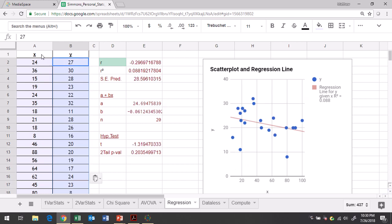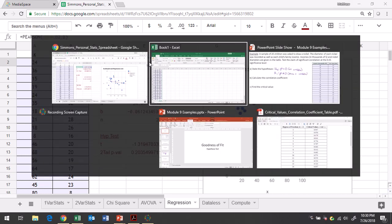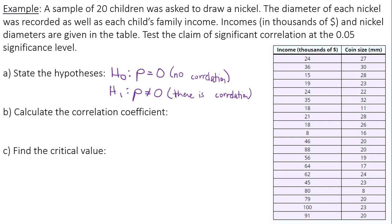Make sure you leave A1 and B1 as X and Y. Those are your header columns, your headings for your columns. It looks like our correlation coefficient r is negative 0.297. That is r.